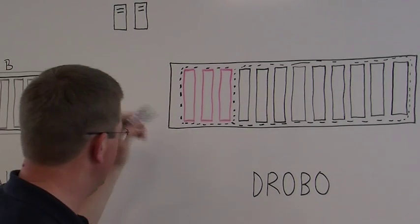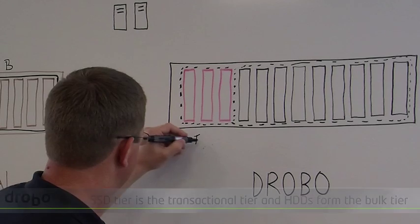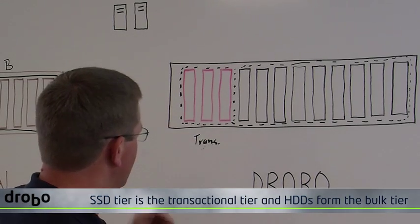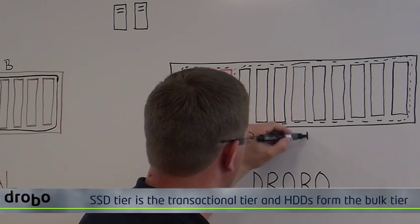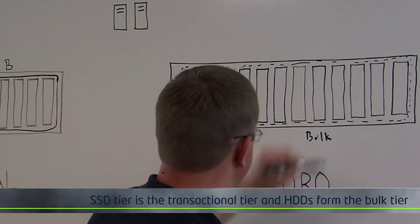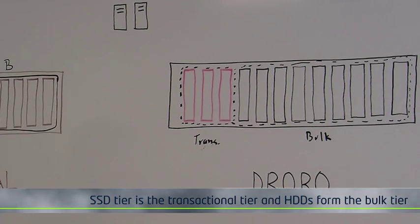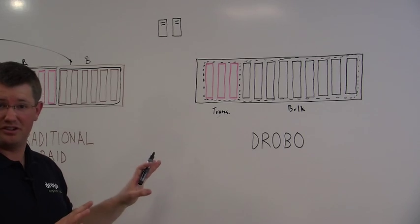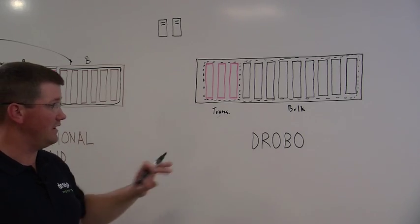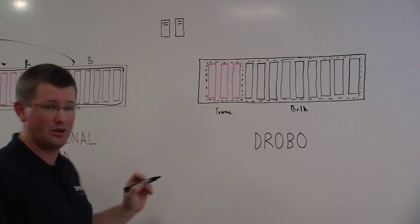So when these tiers are created, the tier for the SSDs is called the transactional tier, and the tier for the hard disk drives we're calling it the bulk tier. Now this happens, this seriously happens automatically. You put in the SSDs, you put in the hard disk drives, and the tier is automatically created. So now, as you create your volumes, you create your volumes on the common pool.